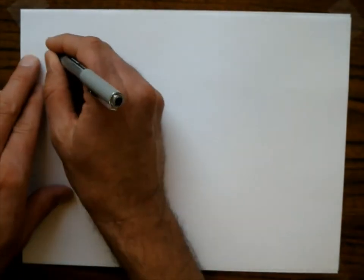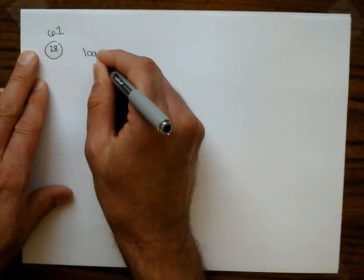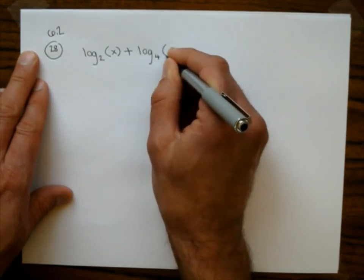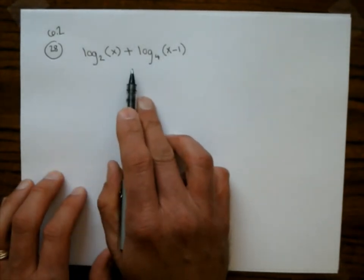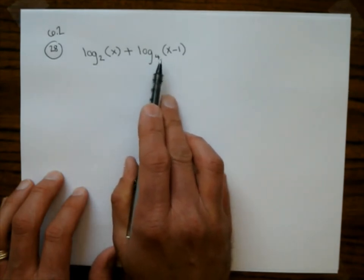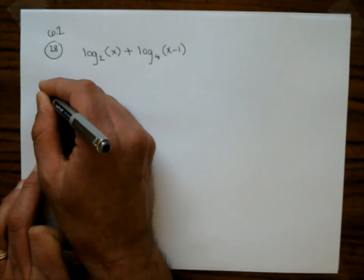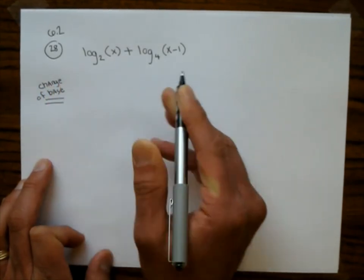One more problem combining into a single logarithm — problem 28. We have log base 2 of x plus log base 4 of (x minus 1). We can't just use the product rule because the bases are different — 2 and 4. So I'll use the change of base formula (property 8) to change the base 4 log to base 2. That gives log base 2 of (x minus 1) over log base 2 of 4. Since log base 2 of 4 equals 2, the denominator becomes 2.